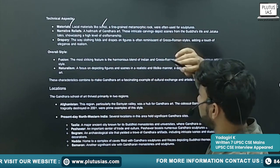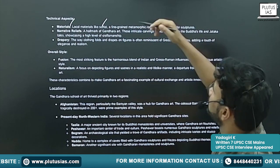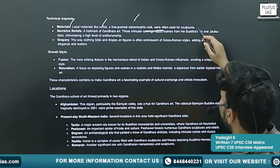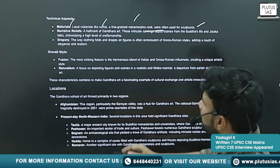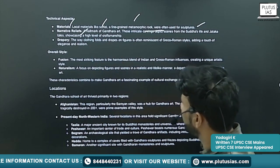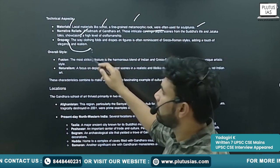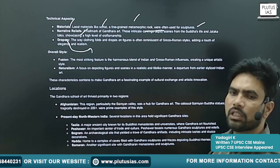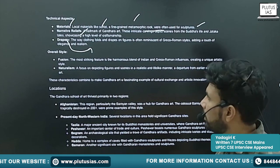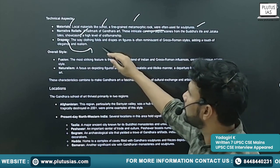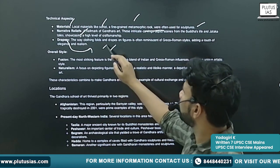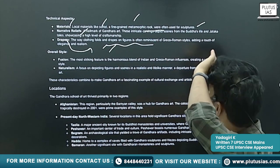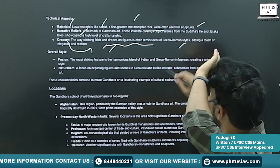Local materials like schist — a fine-grained metamorphic rock — were often used in sculptures. Narrative reliefs also show drapery. On the cloths, you will see a lot of folds. This is also the influence of Greco-Roman art. The way clothing folds and draping of figures is often reminiscent of the Greco-Roman side.